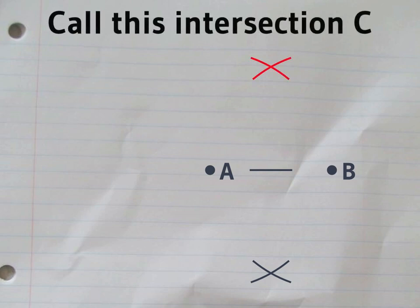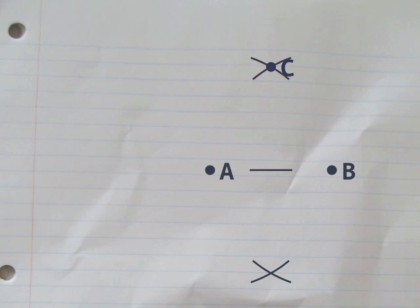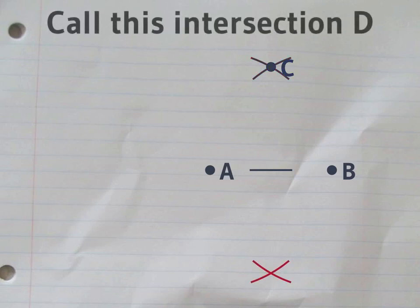These two circles meet in two different places. We'll call this intersection C, and we'll call this one D.